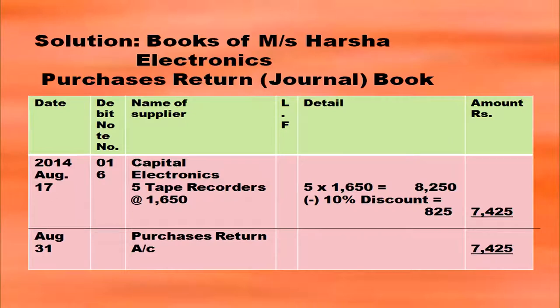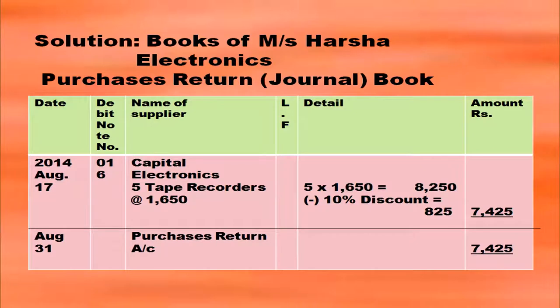Here only one transaction is there. Even if there is one transaction or many transactions, you have to total the purchases book, purchase returns book, sales book, sales returns book, etc. So here with only one transaction you have to total and write 7,425. In the same line in the name of the supplier column you have to write purchases returns account, and the date will be the last date of that particular month, August 31st.